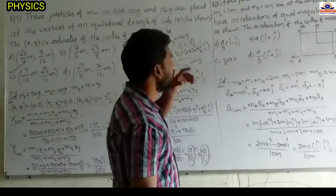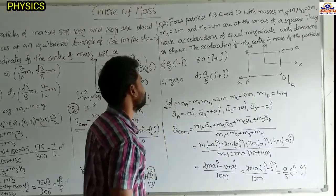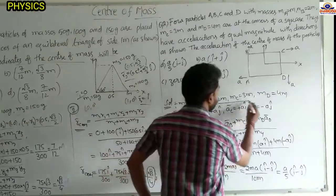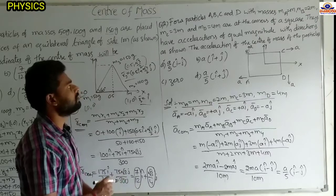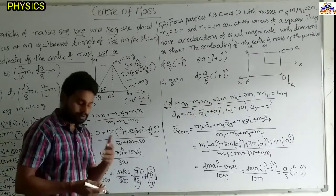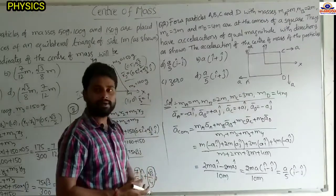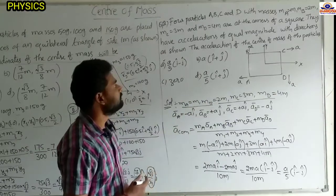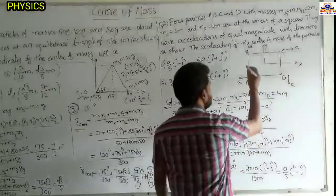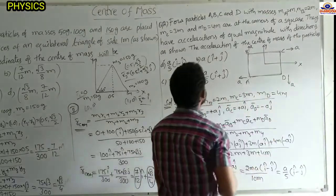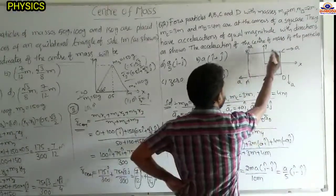Next question: 4 particles a, b, c, d with masses ma=m, mb=2m, mc=3m, md=4m are at the corners of a square. They have accelerations of equal magnitude but different directions as shown. Particle a moves left (acceleration = −aî), particle b moves upward (acceleration = +aĵ), particle c moves in positive x direction (acceleration = +aî), particle d moves downward (acceleration = −aĵ). We have to find the acceleration of the center of mass.